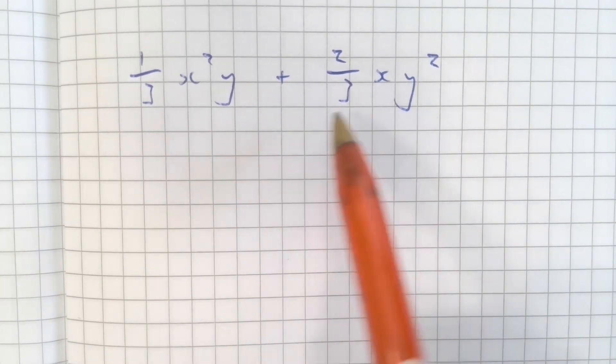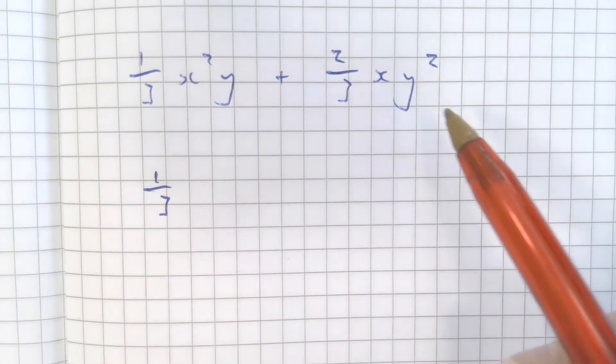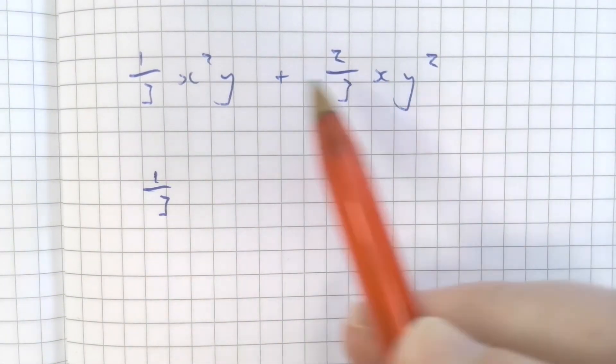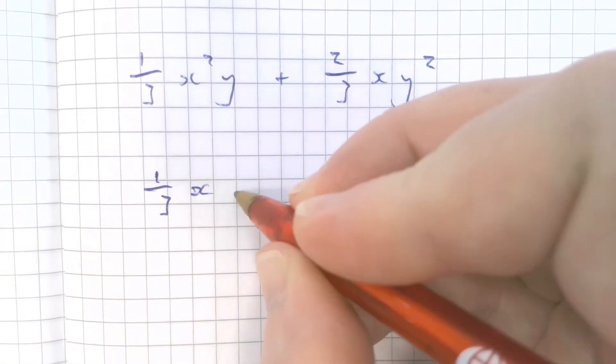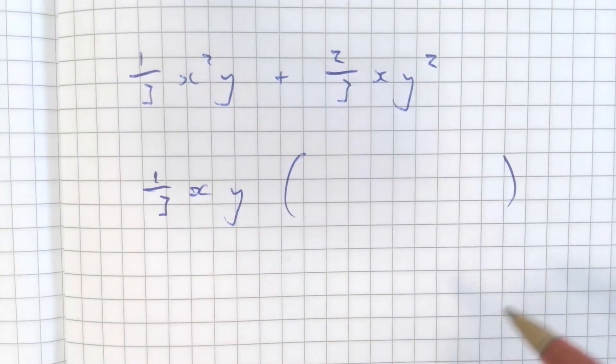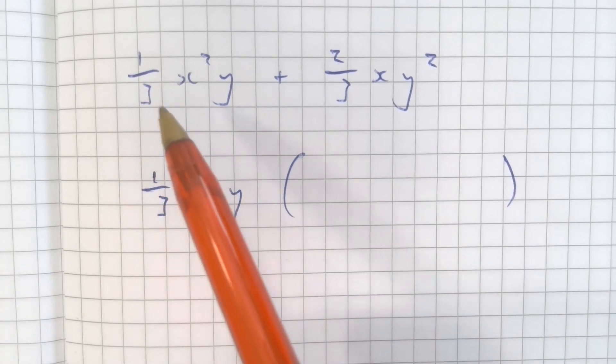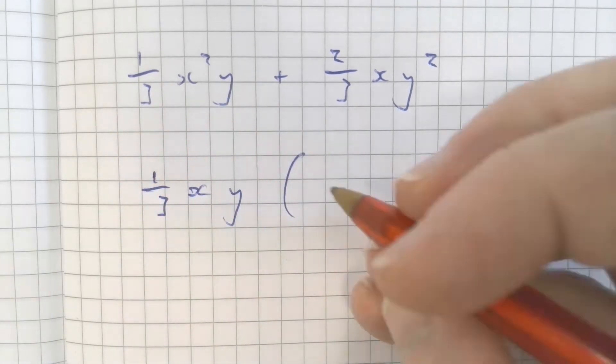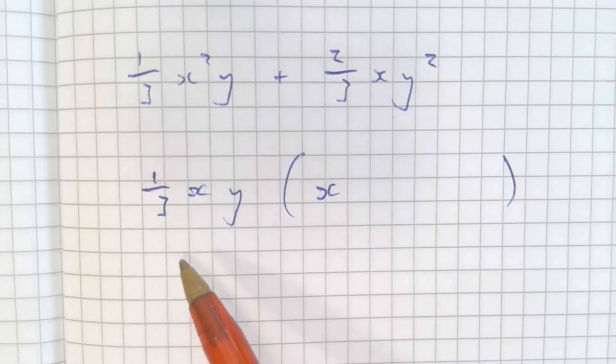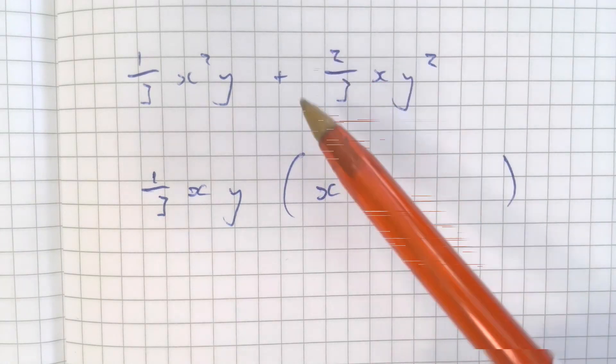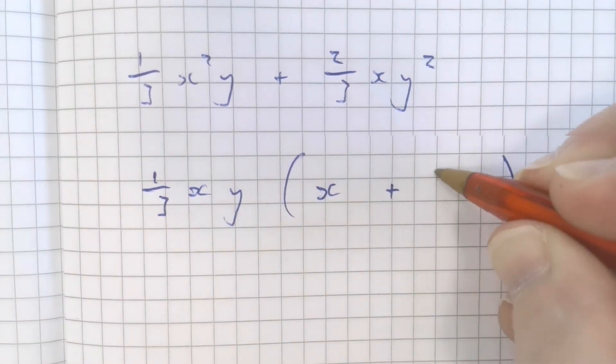So what's common between a third and two thirds? That would be a third. And then we've got x squared y here and x y squared here. We should see that common between both of these terms is the letter x and the letter y. What goes inside the bracket? What do I times a third x y by to make a third x squared y? Well, you should see that that's just the letter x. And then what do I times a third x y by to make two thirds x y squared? Well, you should see that that is 2y.